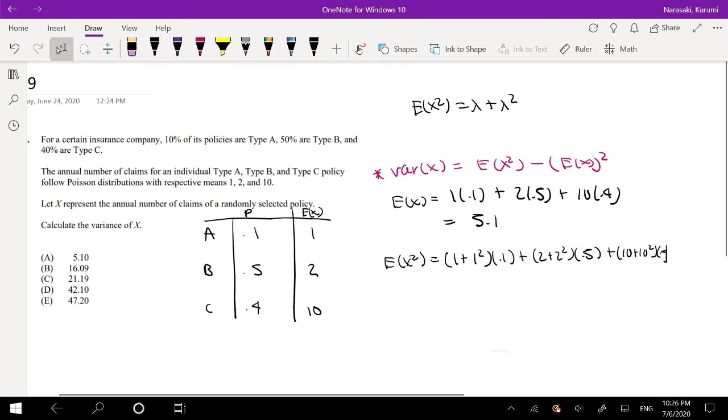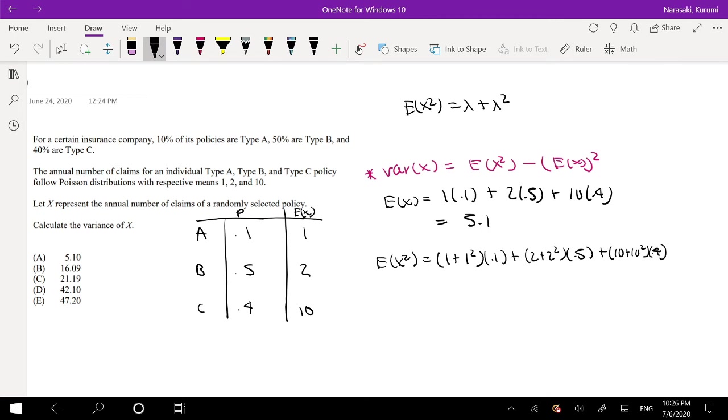Okay, so what would that be equal to? I'm going to simplify it first: that's 2 times 0.1, plus 6 times 0.5, plus 110 times 0.4.